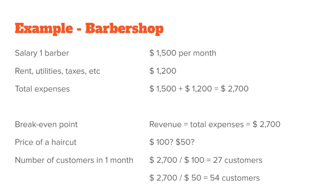The final thing in this section is the break-even point — the point at which your revenue and total costs are equal, meaning you're earning enough to pay for all your expenses. For the barbershop, the salary is $1,500 and other expenses are $1,200, so total costs are $2,700 per month. If we don't earn $2,700, we're losing money; if we earn more, we make a profit. By knowing the break-even point, we can calculate what our price should be and how many customers we need.